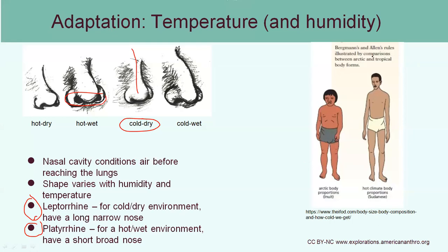On the right-hand side, we see Bergmann's and Allen's rules applied specifically to human body shapes. A person of Inuit origins lives in very cold environments, so they tend to be shorter and stockier, and they also have more body fat to help maintain their temperature. In contrast, a person from Sudan in Africa — a very hot climate — is very tall and thinly proportioned.